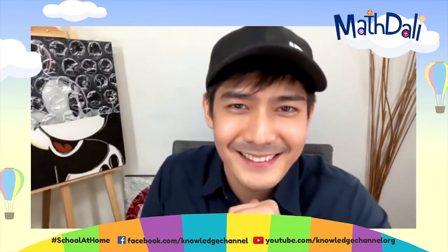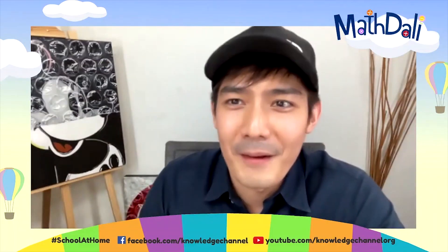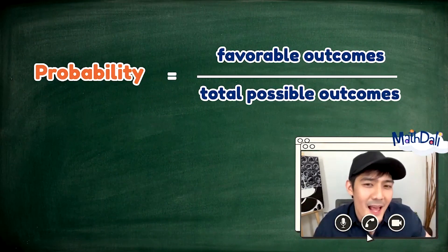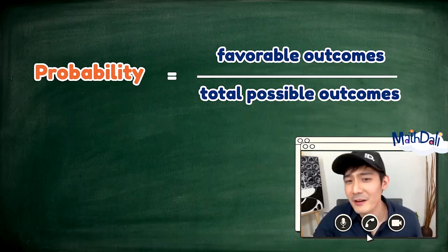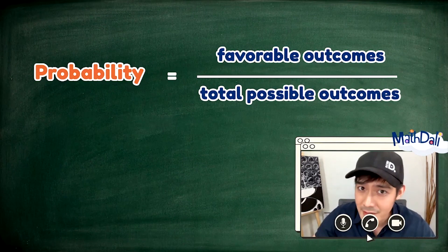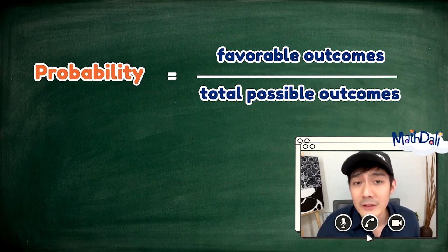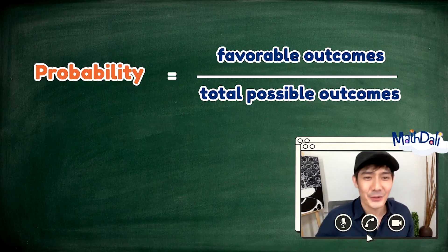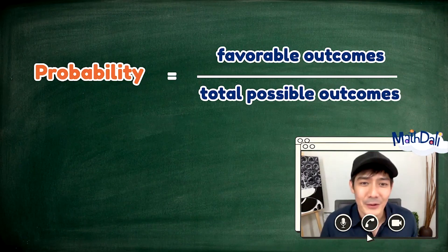Natatandaan niyo pa ba yung lesson natin sa probability? Mag-review tayo, mga kababayan. Ang probability ay ang bilang ng tsansa na maaaring mangyari ang isang bagay. It is the number of favorable outcomes over the total number of outcomes. At pwede natin i-express ito as a fraction, as a decimal, and percentage. Pero ngayon, pag-uusapan muna natin at gagamit muna tayo ng fraction. Mag-aralan natin yan sa mga darating na panahon.